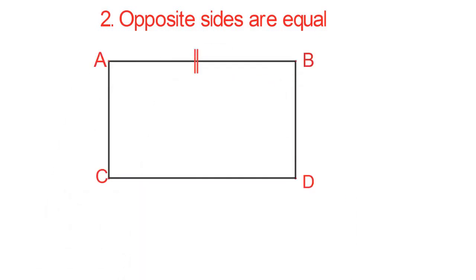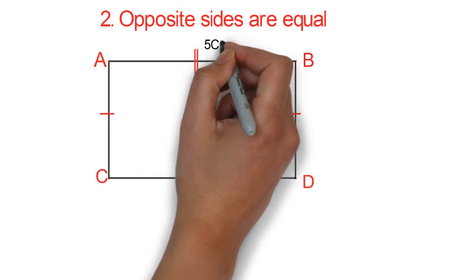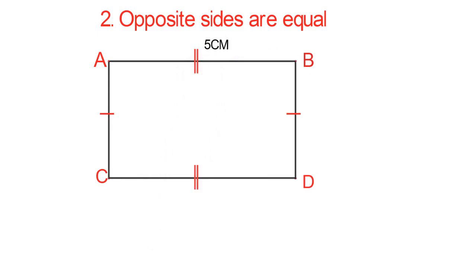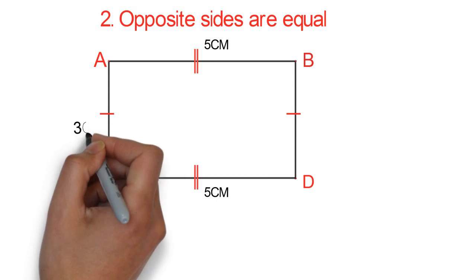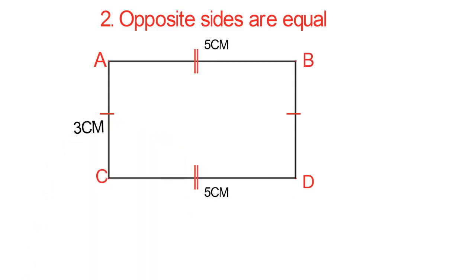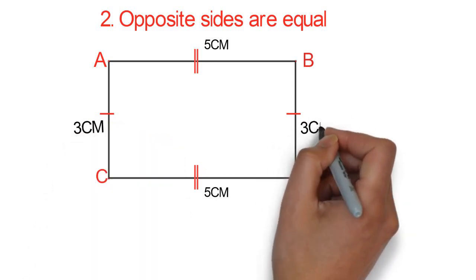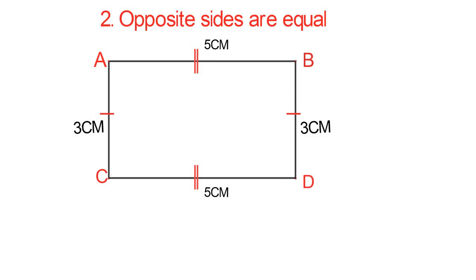Two: opposite sides are equal. What do I mean by this? It means this side is equal to this, and this side is equal to this. For example, if line AB is equal to five centimetres, then CD will also be five centimetres. And if AC is three centimetres, BD is three centimetres.